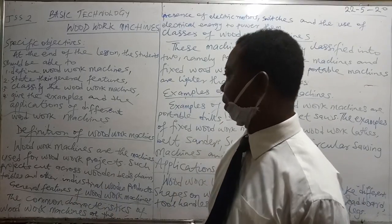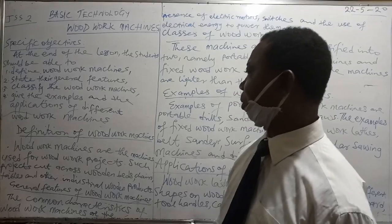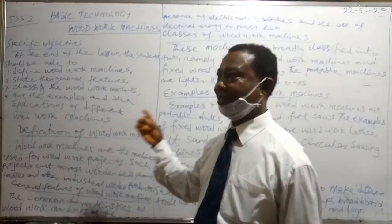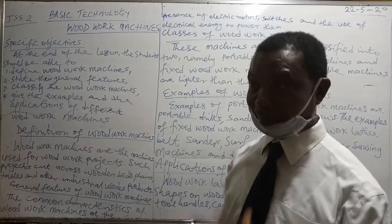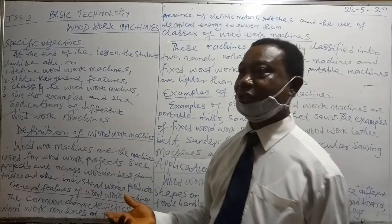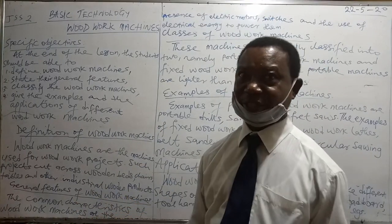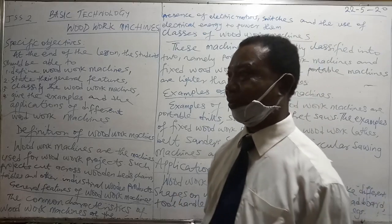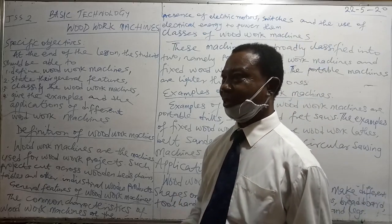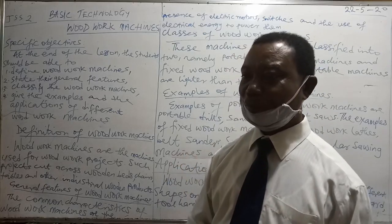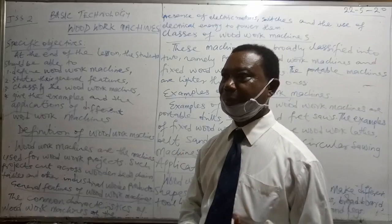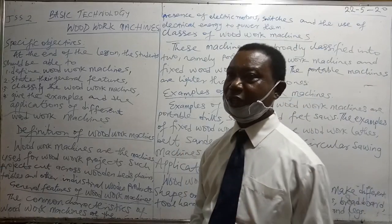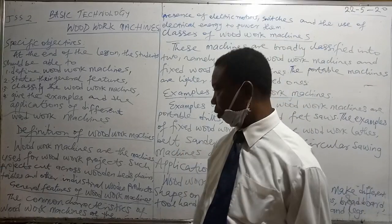We take off the topic by looking at the definition of woodwork machines. Woodwork machines are all the machines we use in woodwork projects, and these woodwork projects cut across products like wooden beds, tables, chairs, and other industrial wooden products.